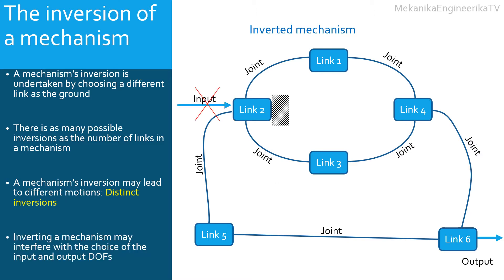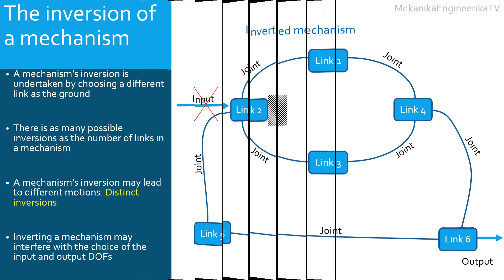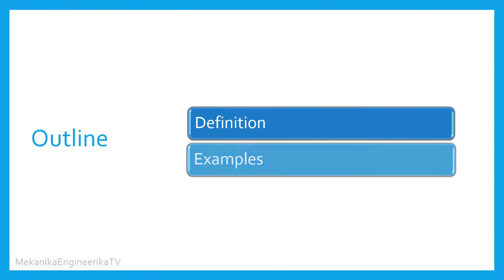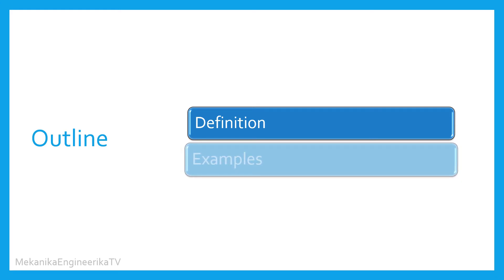Some inputs are possible with some inversions, but they cannot work with other inversions. The choice of the input or output degrees of freedom depends on the mechanism's inversion considered. Also, the choice of the inversion depends on the input motion available and the output motion required. We have completed the first part defining what is an inversion of a mechanism. Let's move now to the second part, where we are going to derive the inversions of some mechanisms.